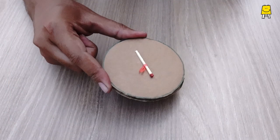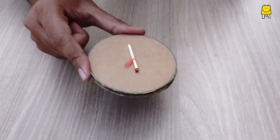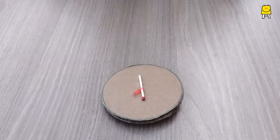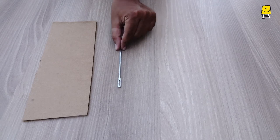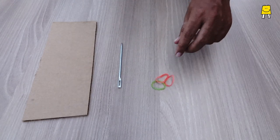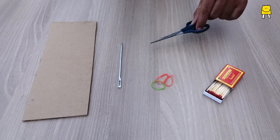This is how you can make a model of a plane joint and understand its movements. You will need cardboard sheet, needle, rubber band, matchsticks, and scissors.